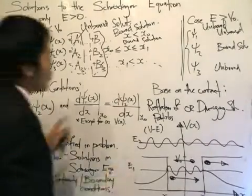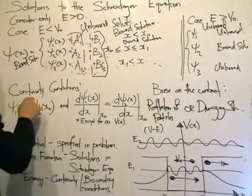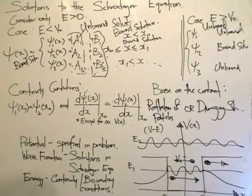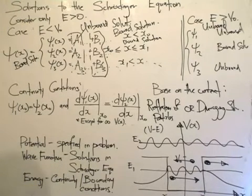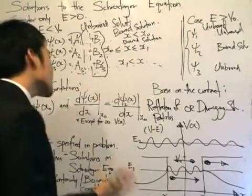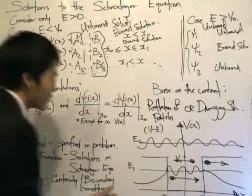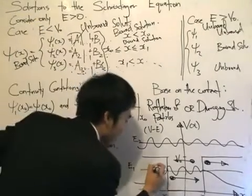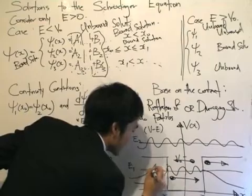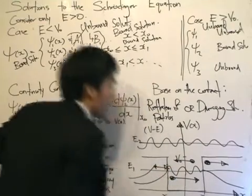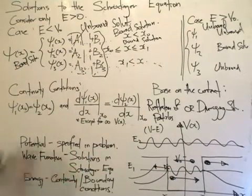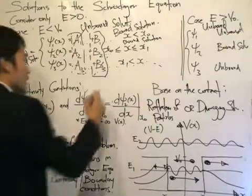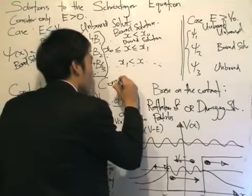To proceed, we use continuity and boundary conditions. The theory is that we are allowed to apply these conditions because, firstly, the wave function needs to be continuous — there can't be a gap in the wave function. If you see a gap like over here, that would tell us we can't find a particle there, which doesn't make sense. The other reason is conservation of matter.